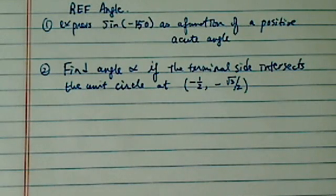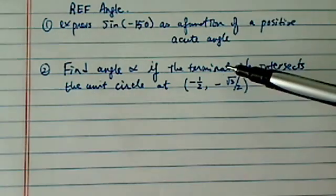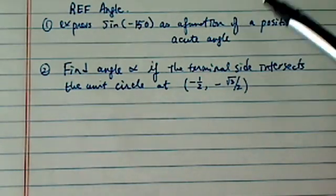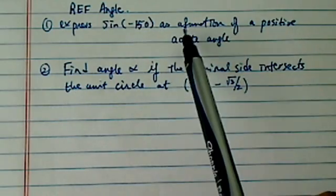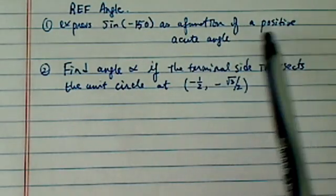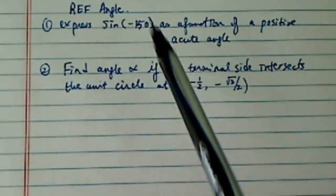Hi there. Thank you for watching this clip on reference angle. It's actually a unit circle. We have two questions here. It looks seemingly difficult. Let's read through it. Express sine minus 150 degrees as a function of a positive acute angle. So we've got to find this angle first.